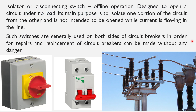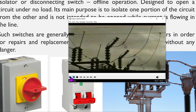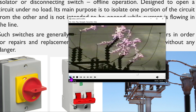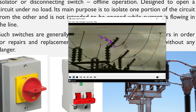An isolator or disconnecting switch is mostly used in offline operation. It is designed to open a circuit under no load — its main purpose is to isolate one portion of the circuit from another and is not intended to be opened while current is flowing. Here I have a short video of a 345,000 volt switch opening, and you can see the significant arc produced.